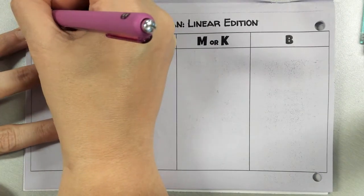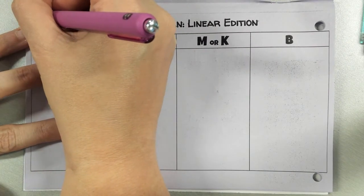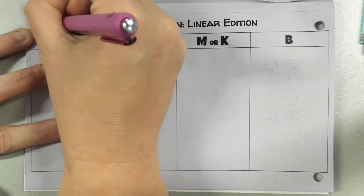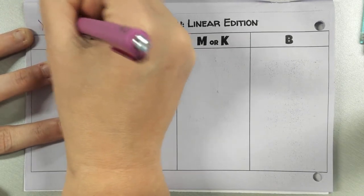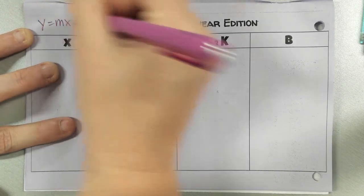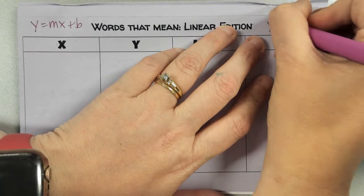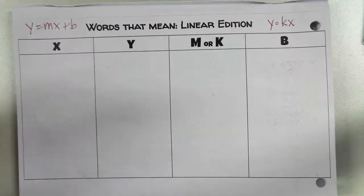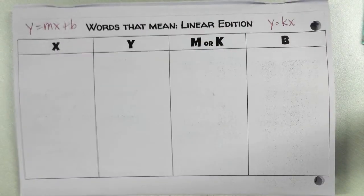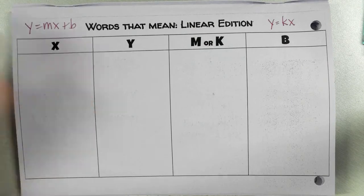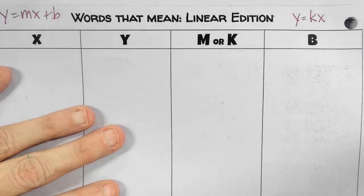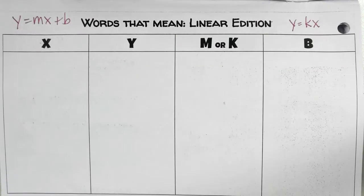We have two forms of equations that you guys have seen so far: Y equals MX plus B, and Y equals KX. There's another one you all learned — Y equals X plus B — but we are not going to be using that because that's a sixth grade thing.